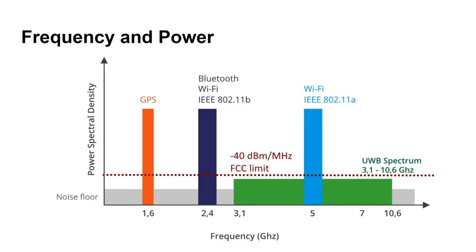Because UWB operates underneath the noise floor threshold — covering from 3.1GHz up to 10GHz — it doesn't need to be licensed. The power levels are so low that regulators say it can't interfere with anything, so you don't need special permission from a state organization to use this radio power. It's also very wide, giving you a huge area to choose channels from.